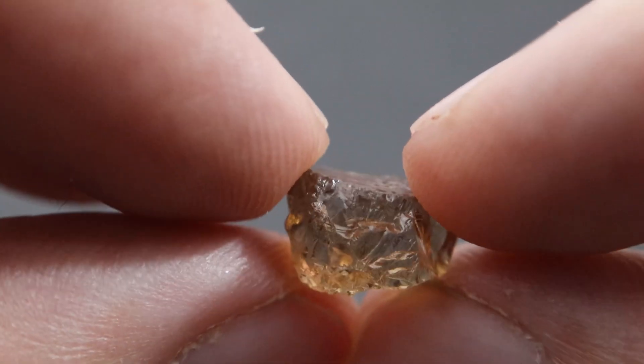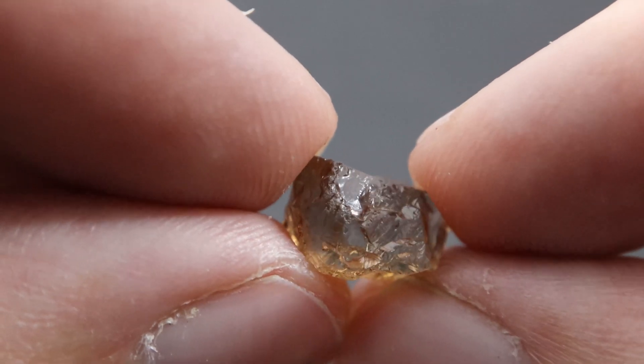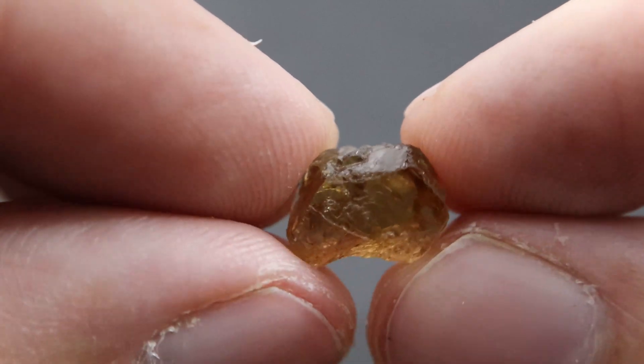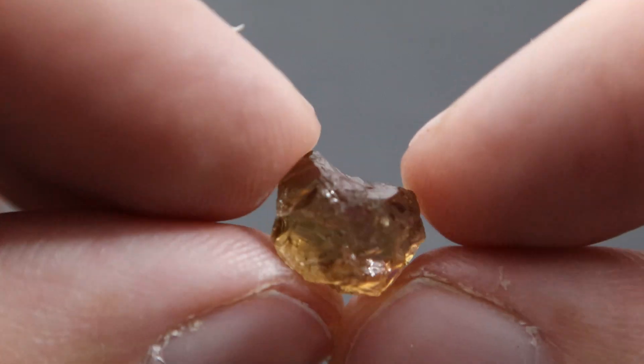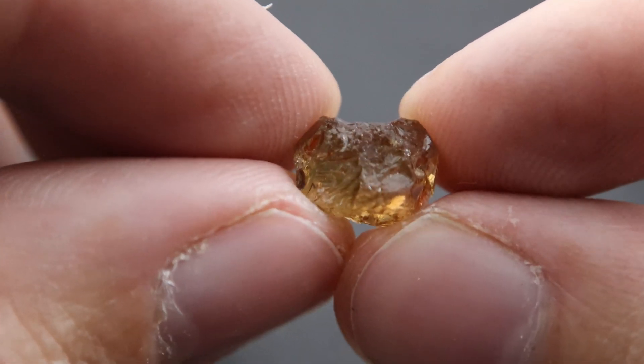This piece shows the typical pleochrism for tanzanite where the color changes depending on the direction that you view the stone. Luckily the color I'm going for happens to line up with one of the larger faces of the stone which works out pretty well for cutting this piece.